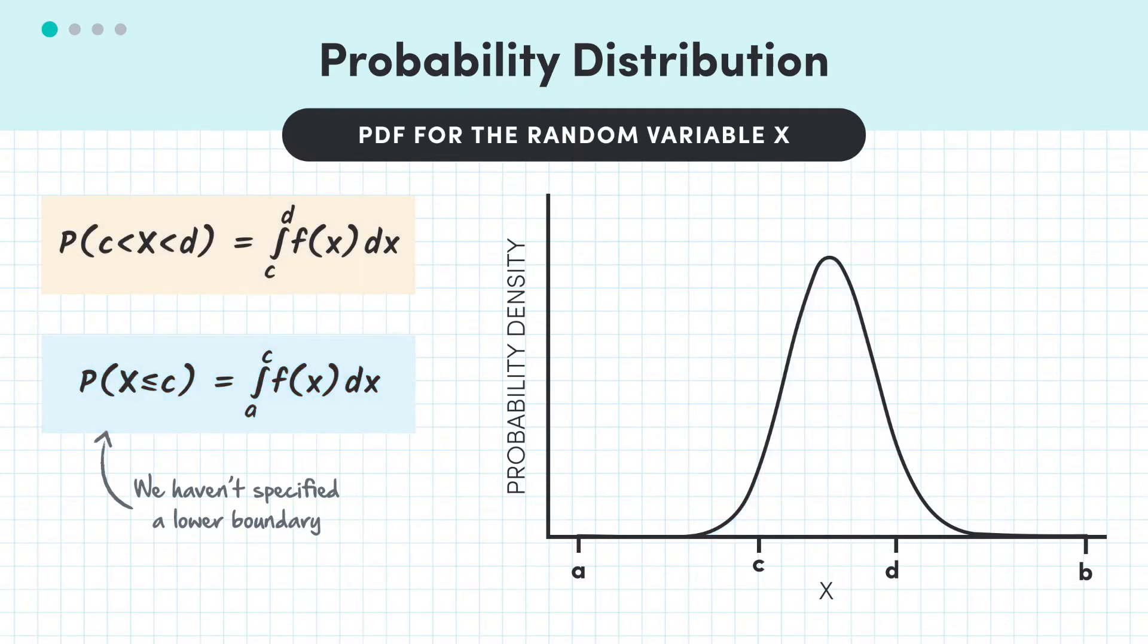So just by looking at a PDF, we can get an idea of which values our random variable is more likely to take. Where f is large, so it's higher above the x-axis than other spots, that tells us our random variable is more likely to take values in and around that neighbourhood. Because the area underneath is greater than in places where the PDF is lower.